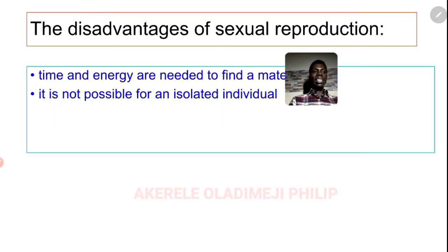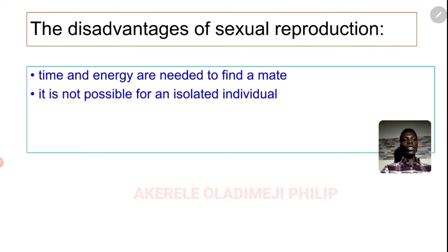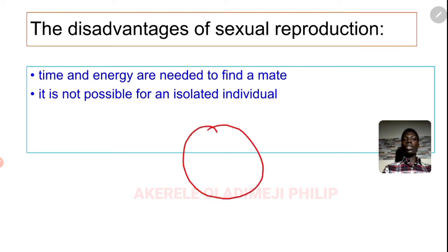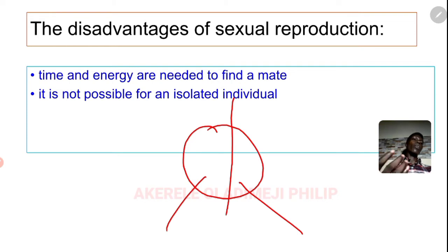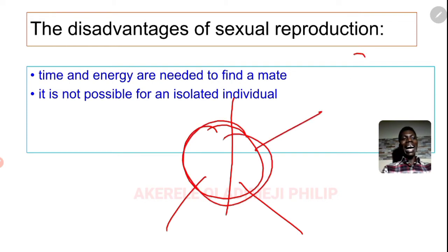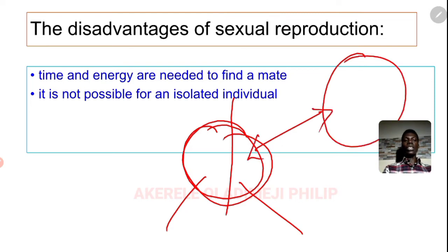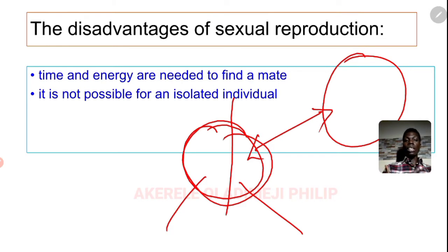Now the disadvantages: time and energy are needed to find a mate. With asexual reproduction, an organism just splits into two and is done. But for sexual reproduction, the organism needs to find another mate to fuse with, so it takes time and energy. There are some organisms that have both male and female gametes in one body, so this first point may not apply to them.